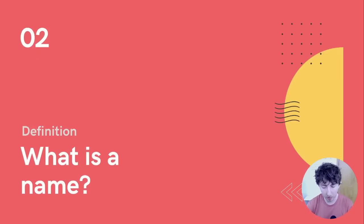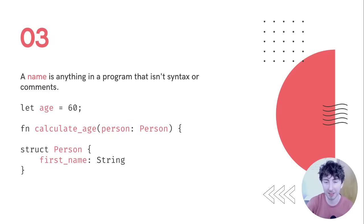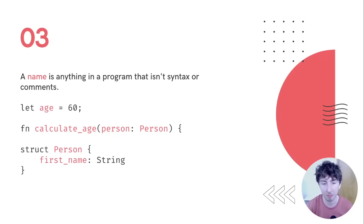What do I actually mean when talking about a name in software? Basically everything in a program that isn't syntax or comments — all the things you as the programmer have discretion over: variable names, function names, argument names, types, struct names, struct member names. All the things that aren't built-in that you have control over — I'm referring to all of these as names.